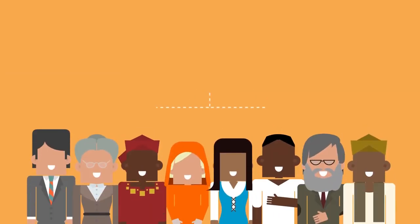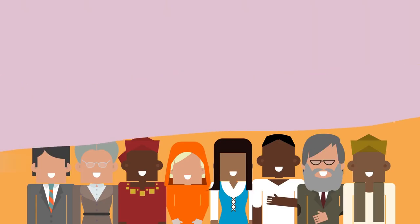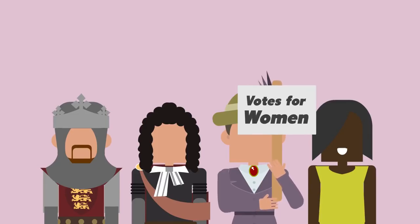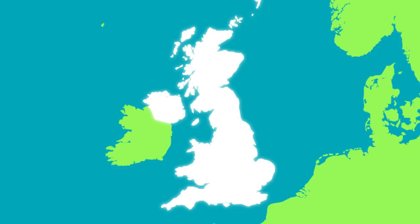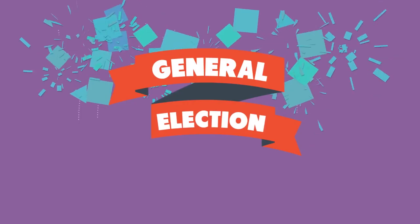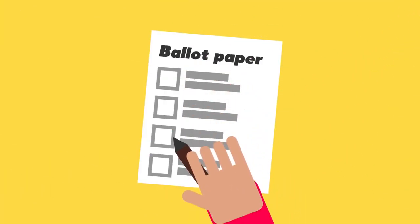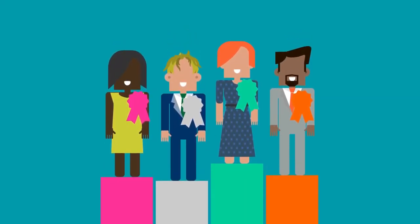In the UK, we live in a democracy, which means power is in the hands of the people through our right to vote. Throughout history, lots of people in the UK have campaigned for the voting rights we have today. General elections take place in the UK usually once every five years, and every seat is up for grabs. On polling day, voters make a choice from a list of candidates, and the candidate with the most votes then becomes that constituency's MP.